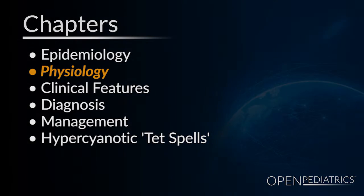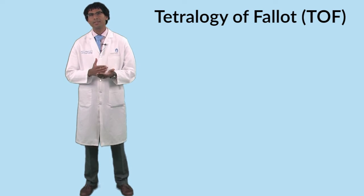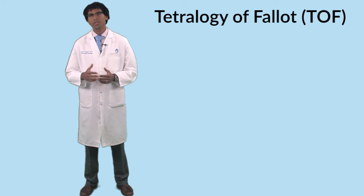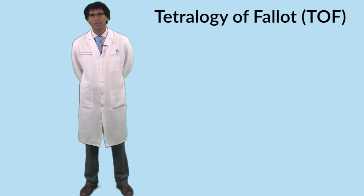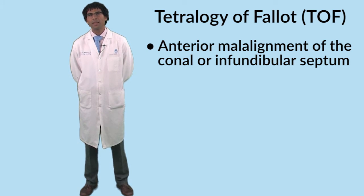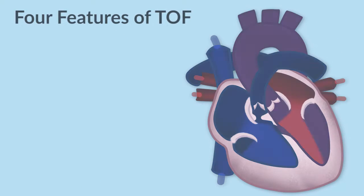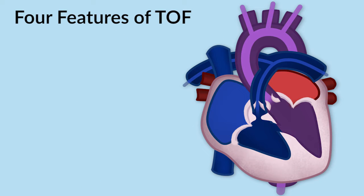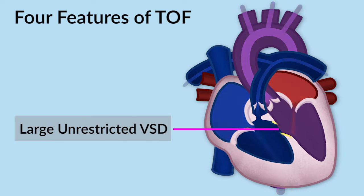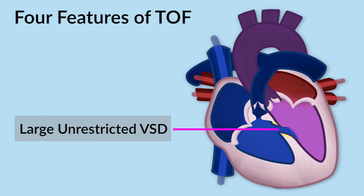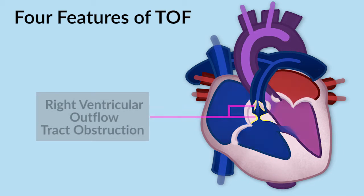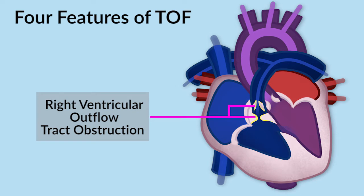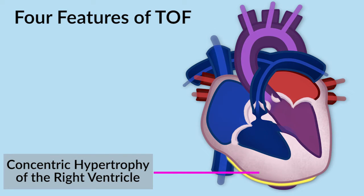Physiology. In understanding how it comes about, there's a single inciting event as the heart develops that explains all four features of Tetralogy of Fallot, and that is anterior malalignment of the conal or infundibular septum. What that creates is the four classic features of Tetralogy: specifically aortic override, a large unrestricted ventricular septal defect, right ventricular outflow tract obstruction, and concentric hypertrophy of the right ventricle.